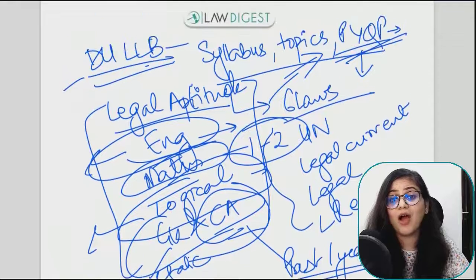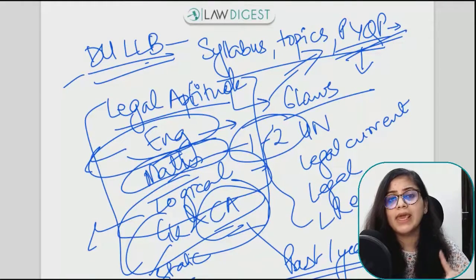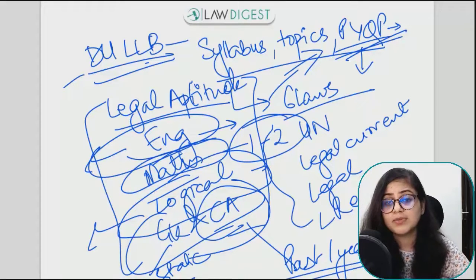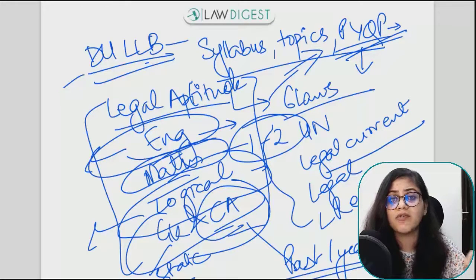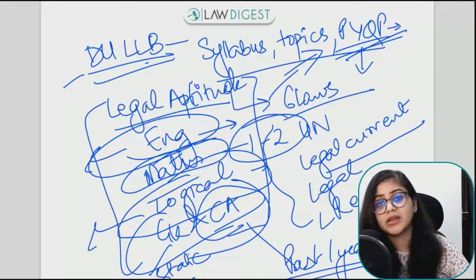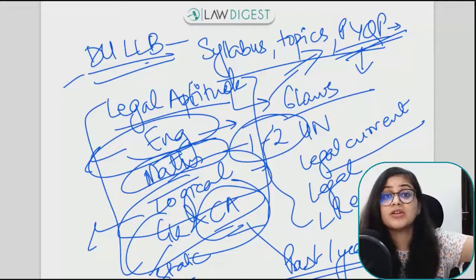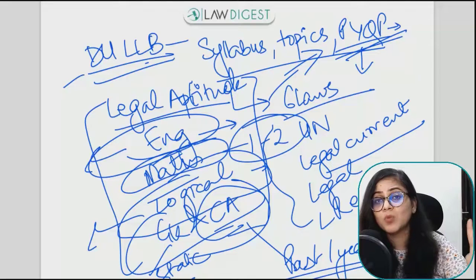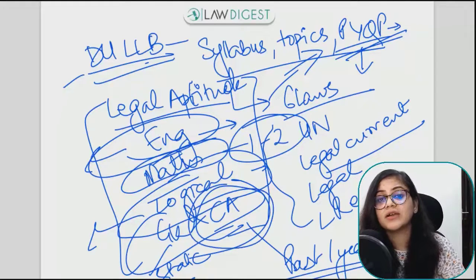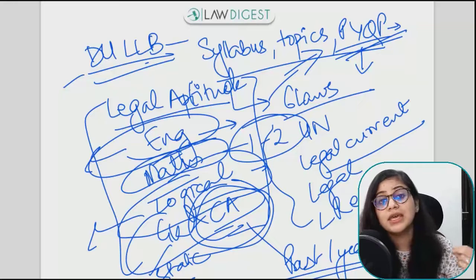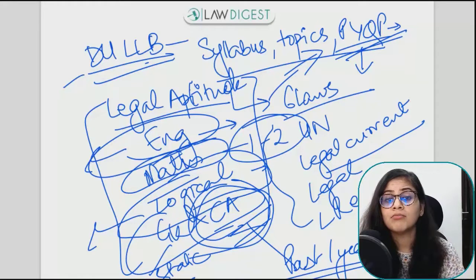Speaking of how to cover these areas, firstly I would say that no single book covers everything for this examination. This is logical — for example, legal current affairs and judgments happen on a daily basis, so it is not possible that one book written today will cover future judgments. The book comes once a year only. Same with current affairs — awards, appointments, sports, national news, international news — for this, you have to do some extra effort and follow monthly compendiums.